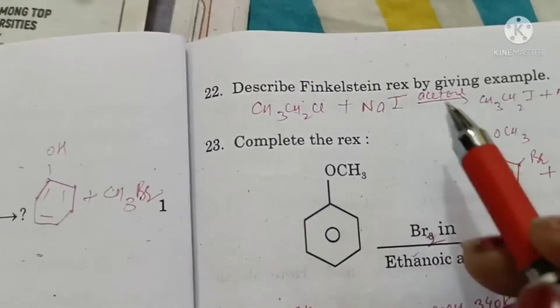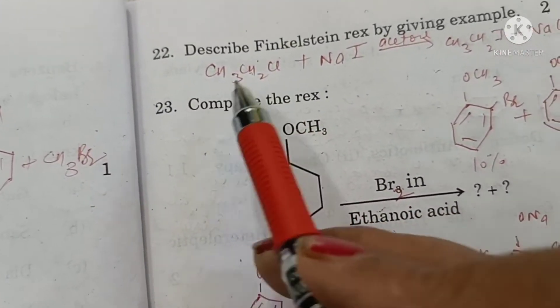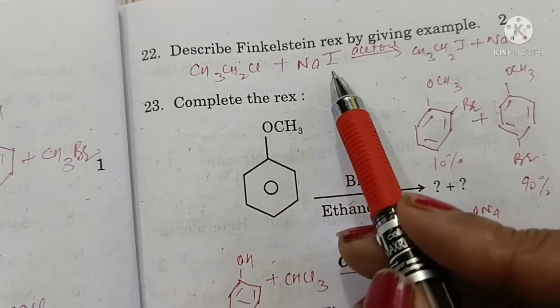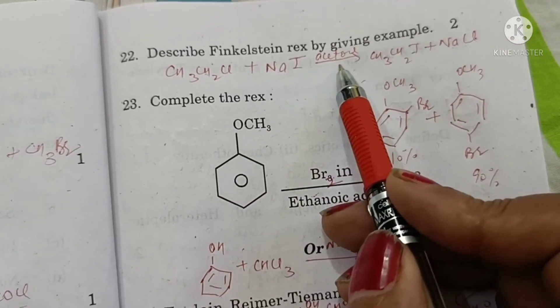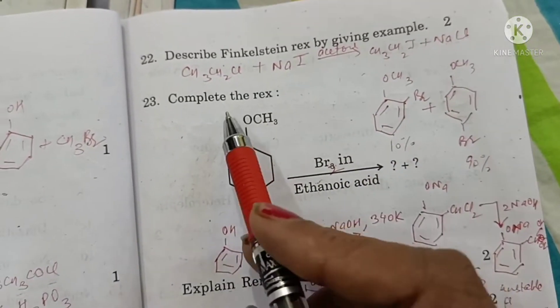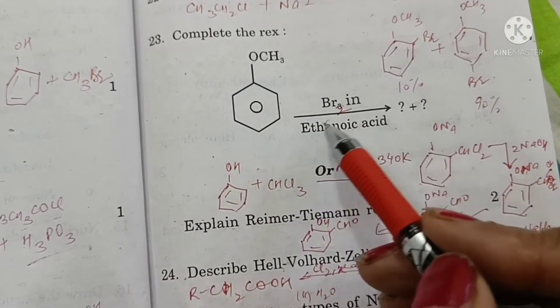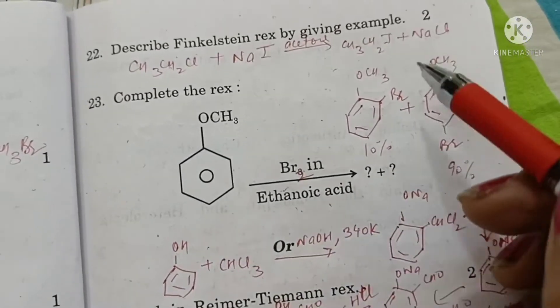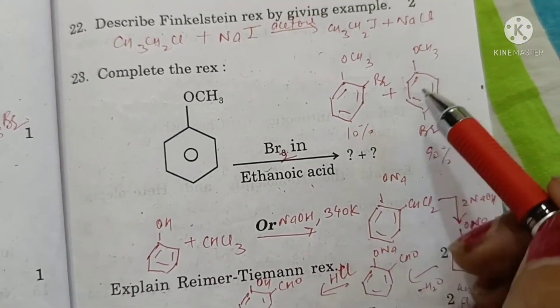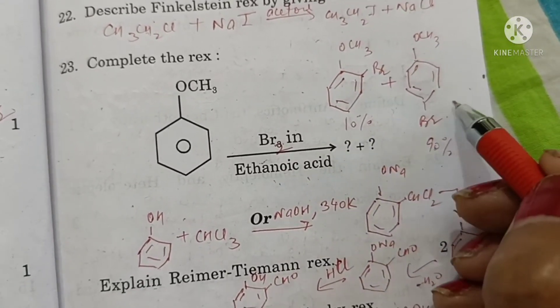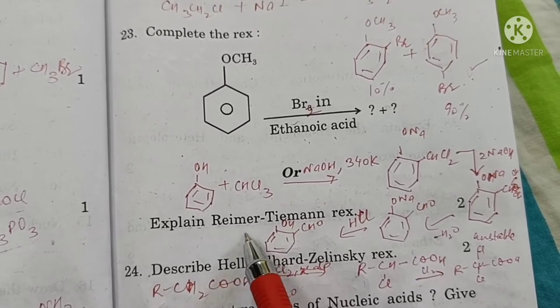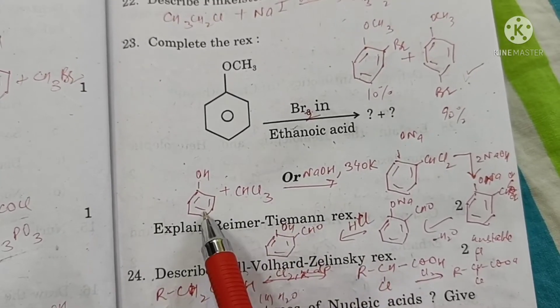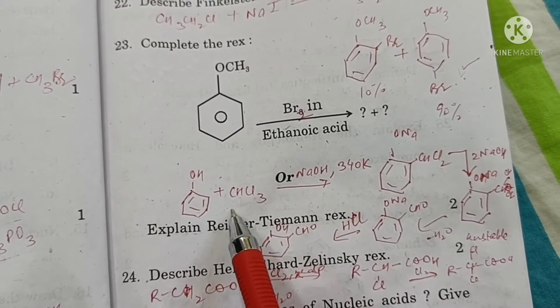In Finkelstein reaction, chloroethane is converted to iodoethane by reacting with sodium iodide in presence of acetone. Then anisole with bromine and ethanoic acid forms 2 and 4 bromo anisoles. This is produced in major amount. Explain Reimer-Tiemann reaction.